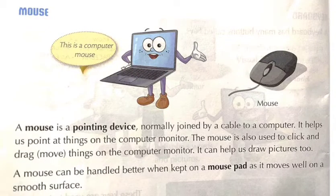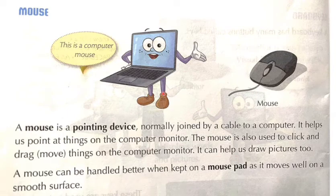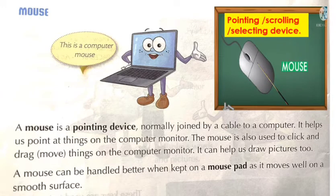We will read about mouse. You already learned how a mouse is used to give instructions to the computer and things are shown on the monitor. A mouse is a pointing device normally joined by a cable to a computer. See this cable? This is the cable with which the mouse is joined to the computer. It helps us point at things on the computer monitor and it can help us draw pictures too.